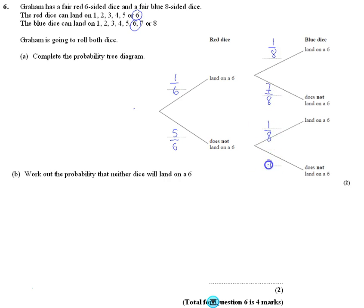Land on a six, one-eighth. Doesn't land on a six, seven-eighths. You just need to fill in the tree with these probabilities, putting the missing values in the blanks.